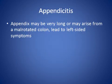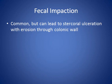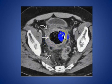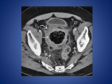Appendicitis may involve a very long appendix or arise from a malrotated colon, leading to left-sided symptoms. Fecal impaction, though common, can lead to stercoral ulceration with erosion through the colonic wall. This patient with fecal impaction shows impacted feces associated with thickening of the rectosigmoid colon and inflammatory changes surrounding the rectosigmoid, suggesting stercoral colitis with ulceration.